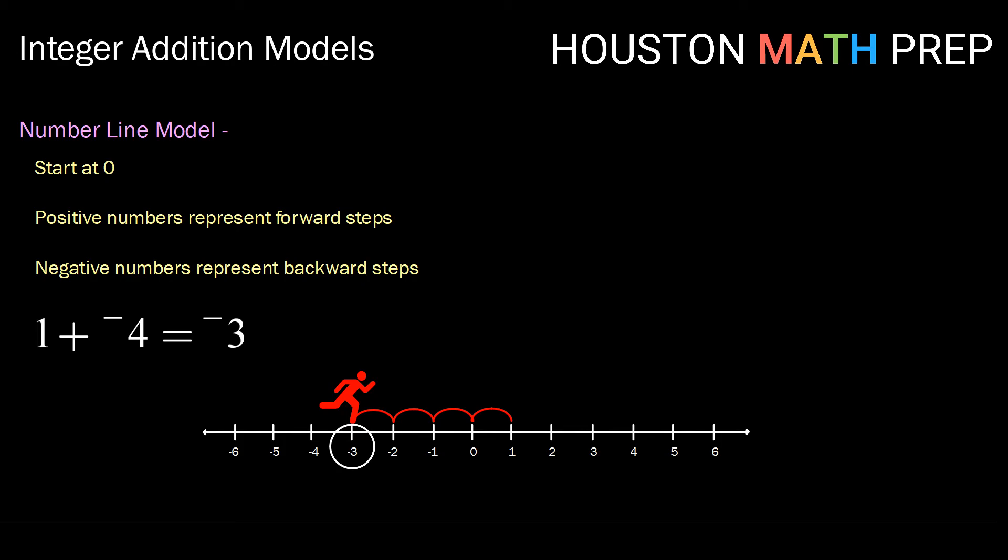In this case, negative three. And that is our result. So one plus negative four is negative three.